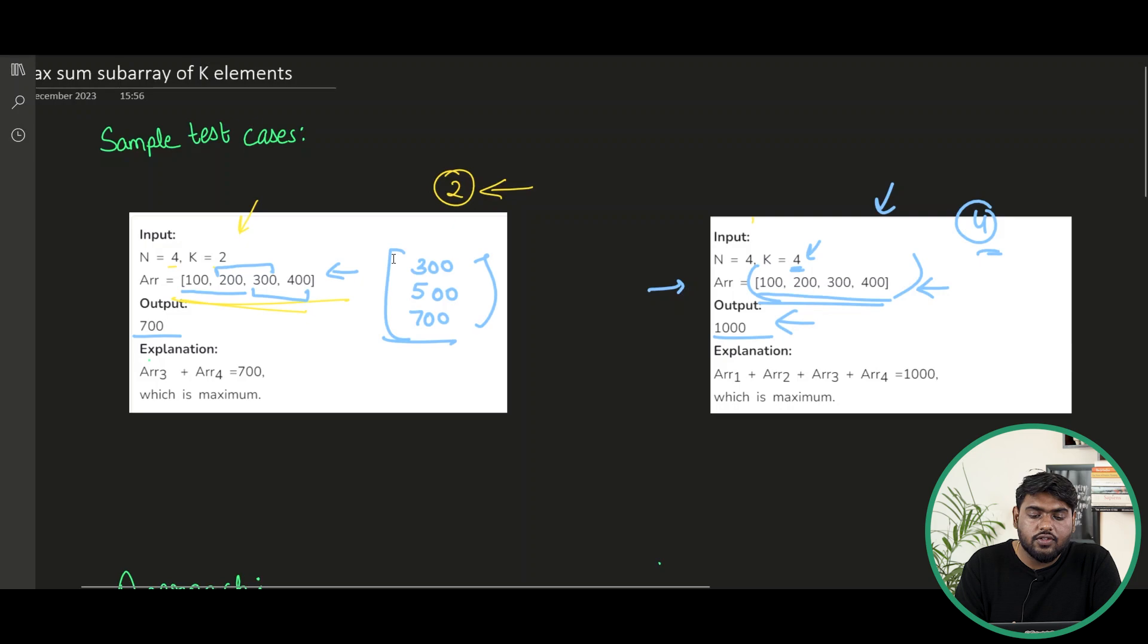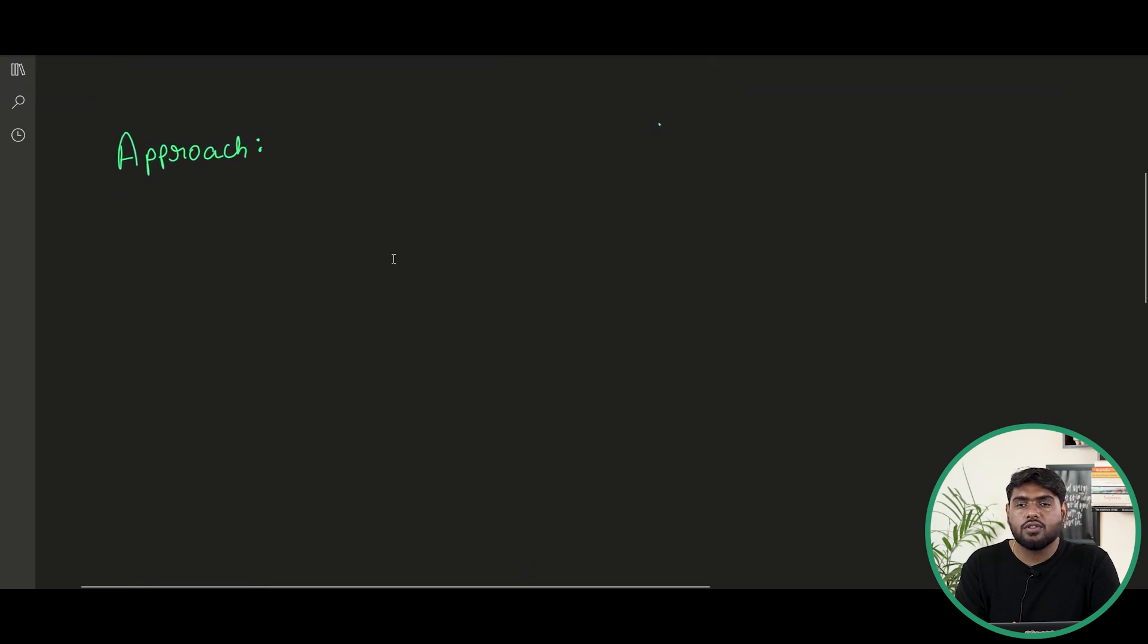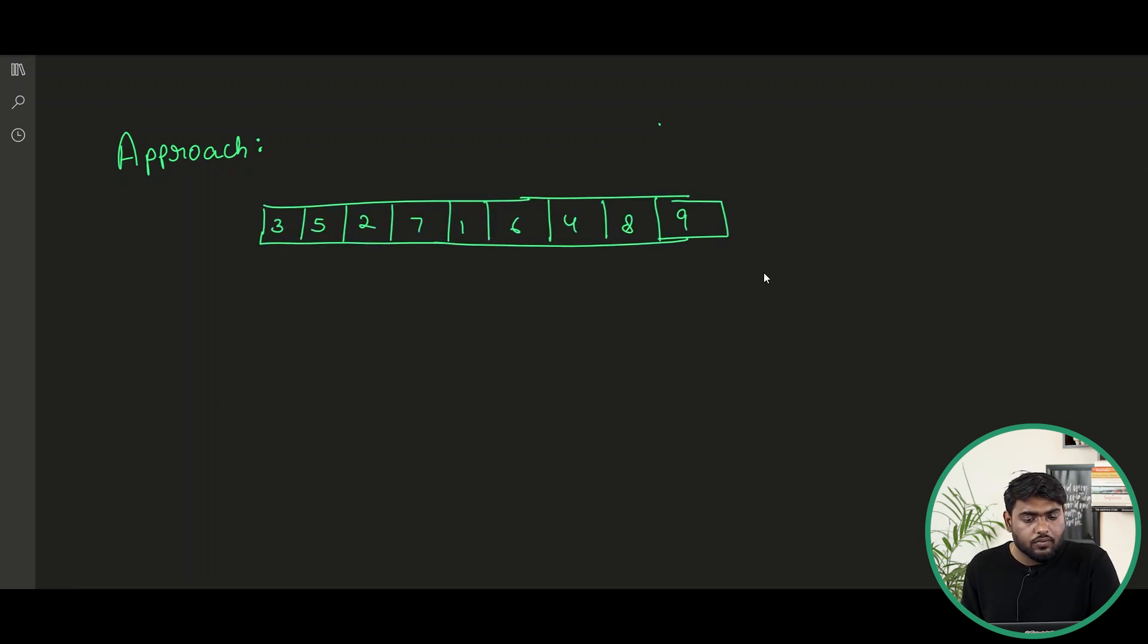So actually if we just even think of the brute force approach, the very basic approach of this question that can land us the answer, which is finding all the substrings and then finding out the maximum one. Let's try to think of that in a better way. I've taken this array now and let's say we have k equals 3. That means we have to take subarrays of size 3.